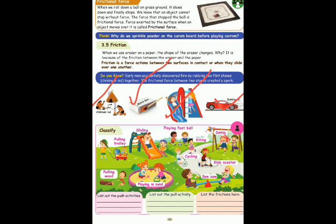In the pictures, there are push activities in the first column, pull activities in the second column, and friction in the third column. Now you can write it — it is simple: one, two, three. You can mark one symbol in the first column. First, there is push activity. Swing — push activity. Kids scooter — where is push activity? Football — you can also get the push activity.